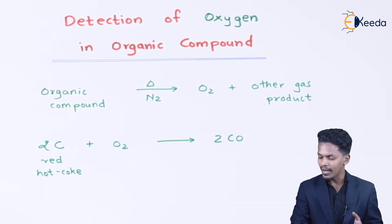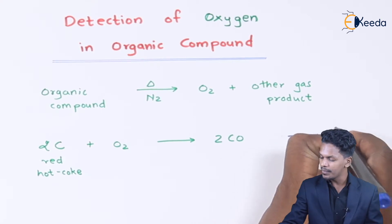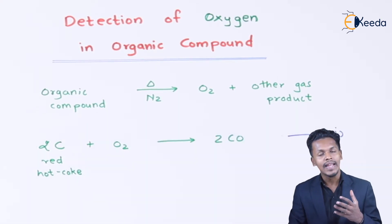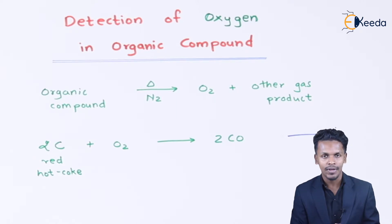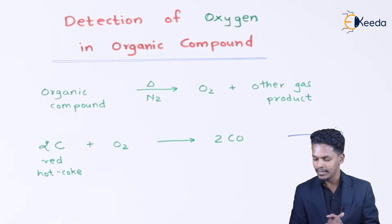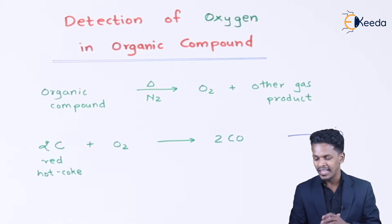This is the product we have got, and this is Equation 1. It requires multiple steps to detect the percentage of oxygen in the organic compound, and this was one of the steps included to show how we can detect the percentage of oxygen.